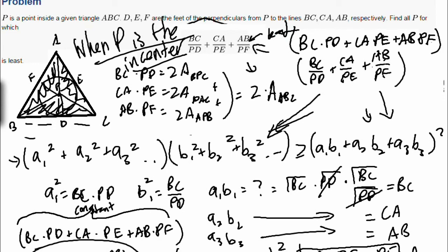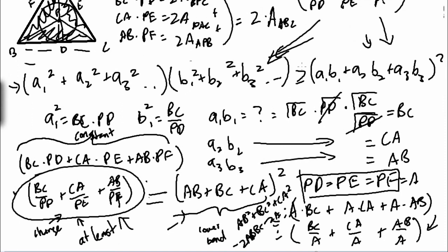So, that's our solution. The solution is that when P is in the incenter, this is the least. And, that's only one point. So, I hope you enjoyed it. I hope you understood. Thanks for watching. And, I hope you enjoyed our application of the Cauchy-Schwarz. I'll see you guys next week.